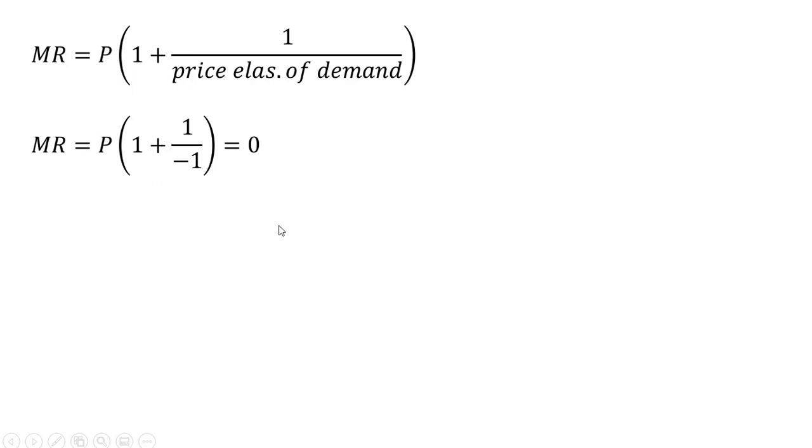and marginal revenue then must be zero. That presents a problem with trying to set marginal revenue equal to marginal cost, because marginal revenue is zero and marginal cost is 2.